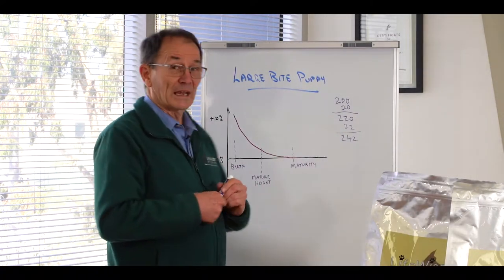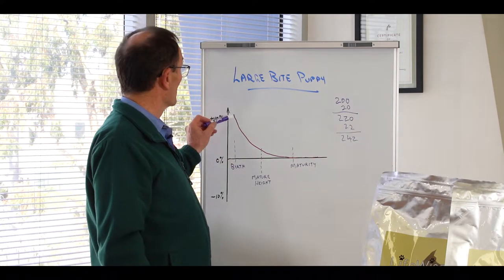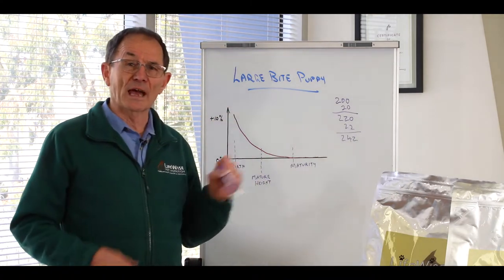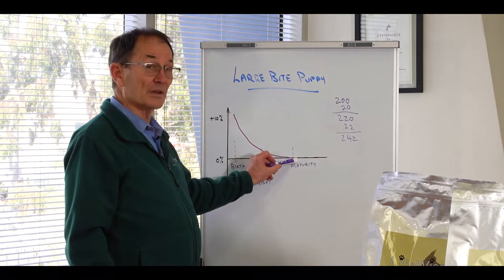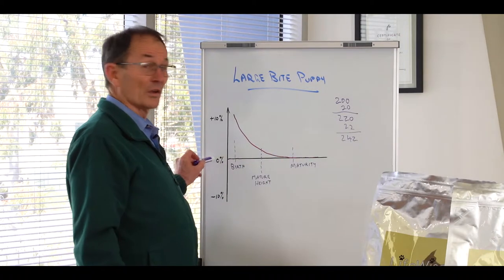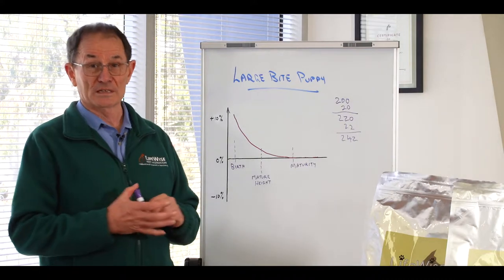Now in reality when our baby pups are born they're going to be growing at somewhere up around that 10% mark but as they age they're going to grow less and less until they get to maturity over here whereby they've got zero growth in terms of body weight increase per day.